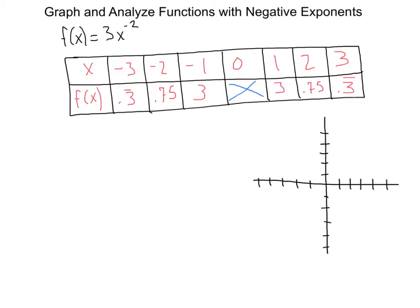Here's an example where our exponent is negative. We have f of x equals 3x to the negative 2.